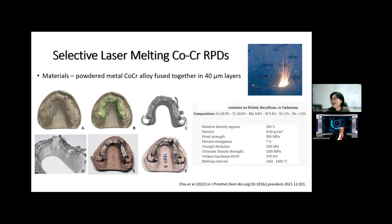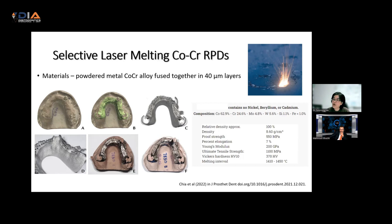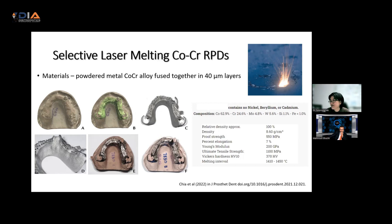With cobalt-chromium framework, there are different ways of manufacturing beyond the conventional approach. You can use the SLM method — Selective Laser Melting — where powdered metal alloy is fused layer by layer, like a 3D printing of your cobalt-chromium framework. Once cut away from the support area and polished, comparing it back to the traditional cobalt-chromium framework, there isn't much visible difference. It requires dental technician colleagues who have this technology, which is a significant financial investment, but the results are wonderful.